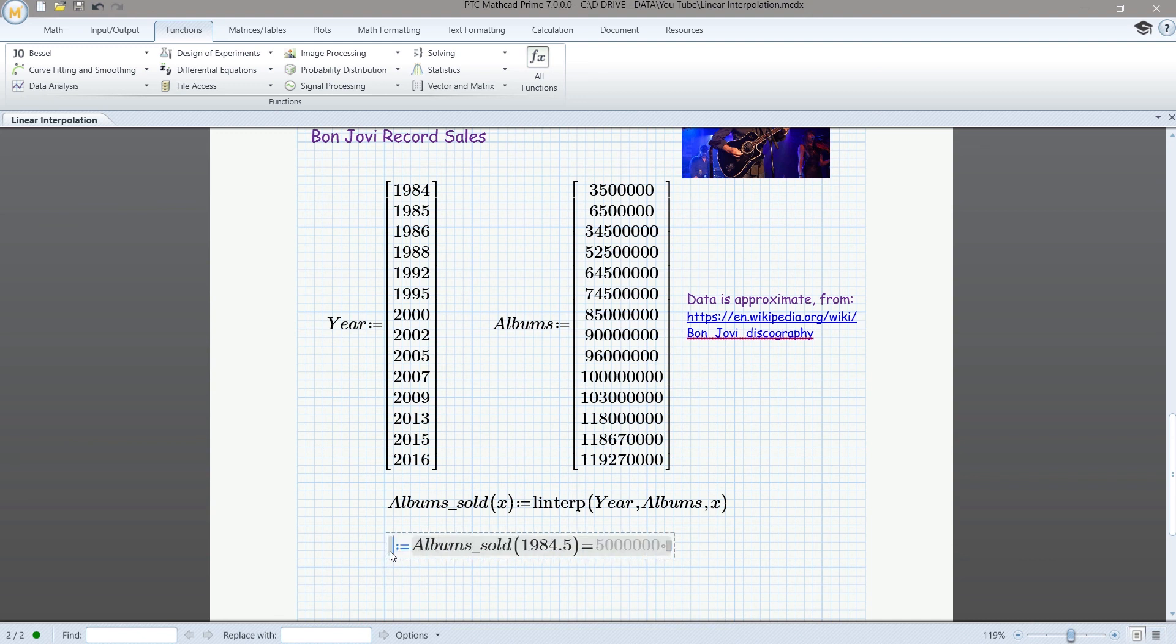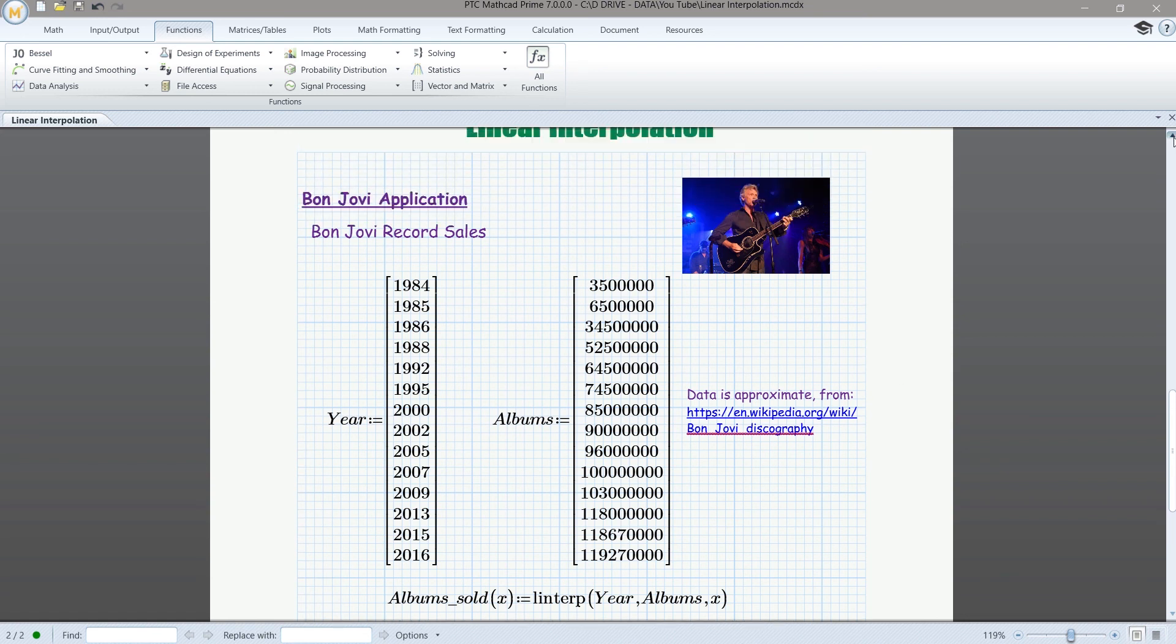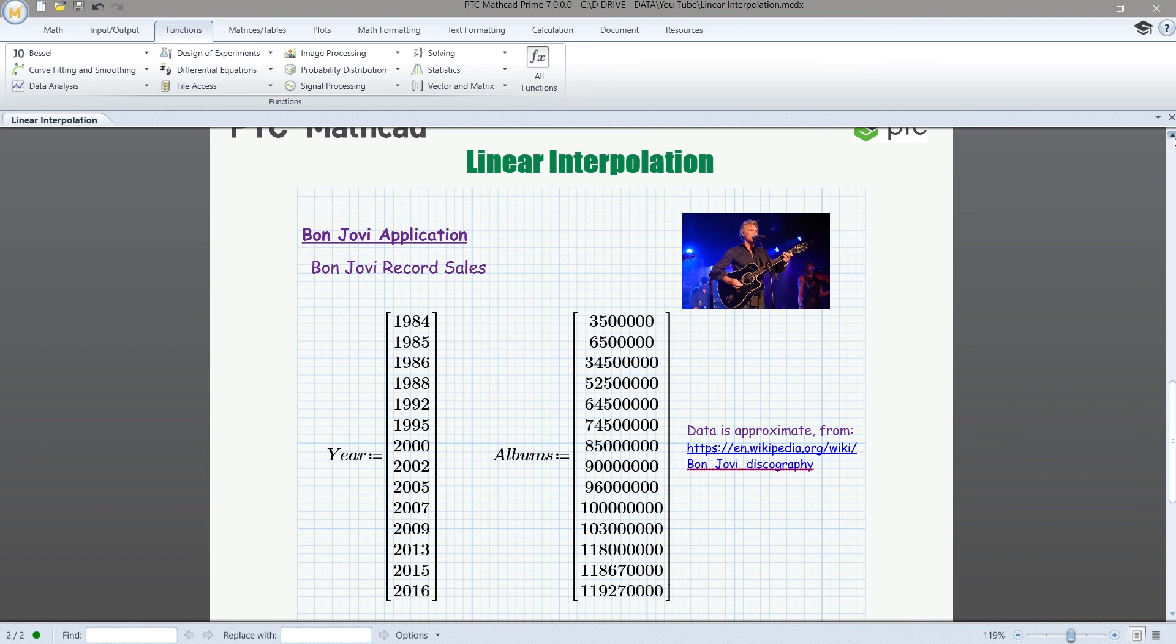And then remember, assign your result to a variable, albums sold, subscript 1984.5. And so then we'll take that and we'll just display it on its own so that it's nice and clean. Okay, that is it. Now you know how to do linear interpolation.